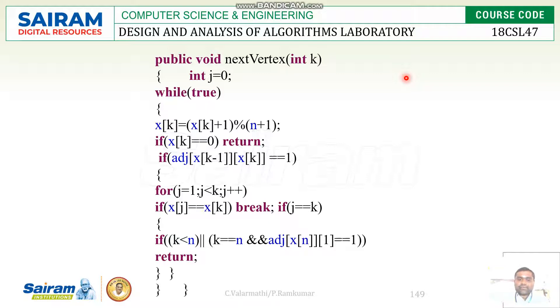If the value is zero, then the value needs to be returned. Otherwise, we have to compute the next adjacency vertices of a given graph.